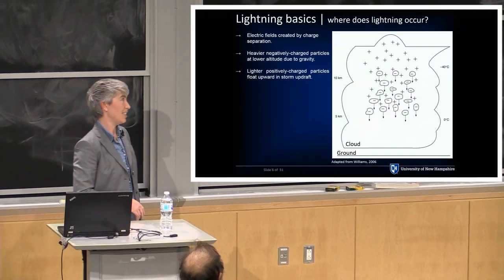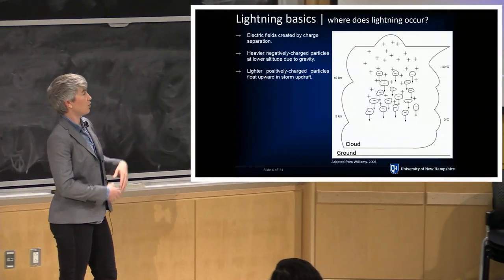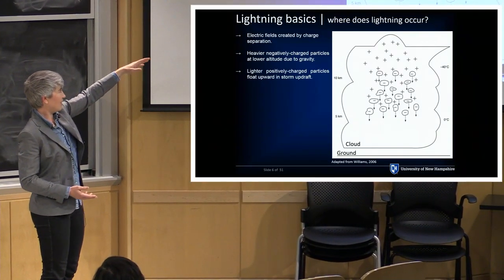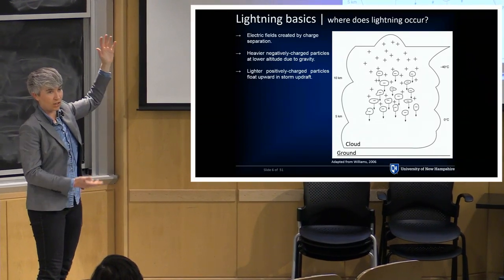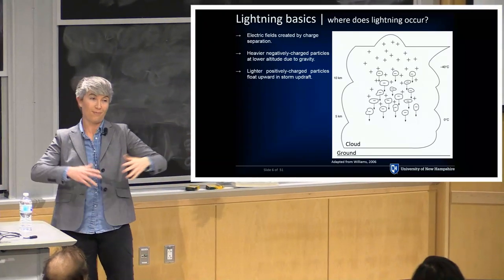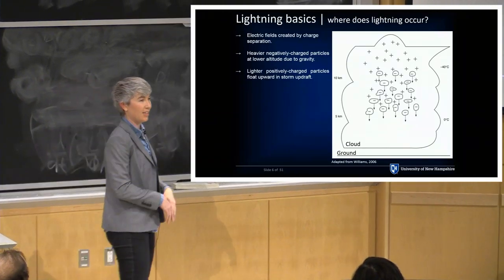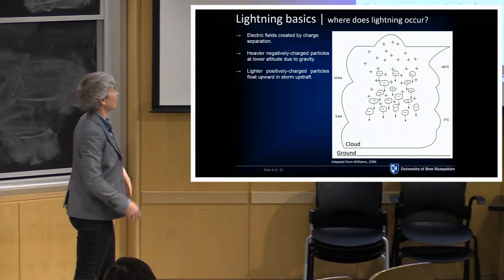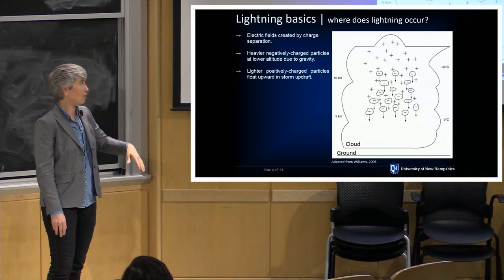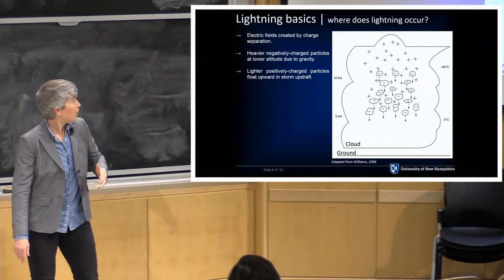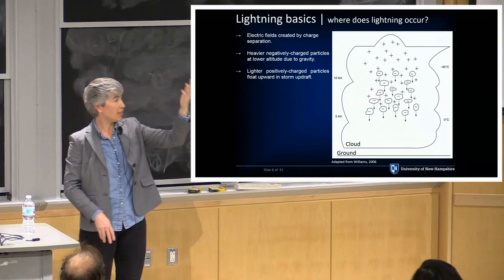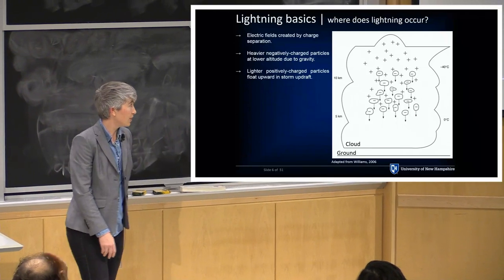So how does this all get started? Well, we need an electric field, so we need some sort of charge separation in the cloud. This is a schematic, and I just want you to look at the scale here. This is tens of kilometers tall. These thunderstorms are really, really big. You have heavier particles maybe charged negatively, lighter particles like ice crystals charged positively. The negative, heavier particles fall in gravity. You have positive particles being lofted up in a very strong updraft in these storms. And you get a charge separation.